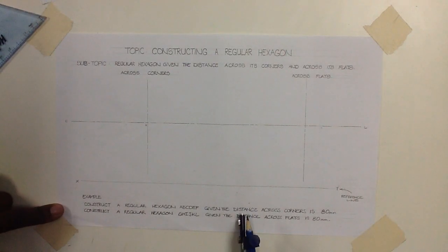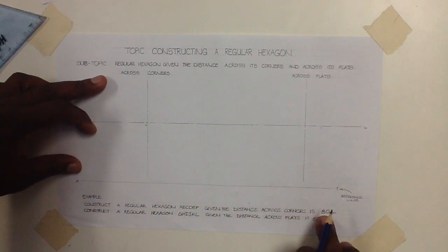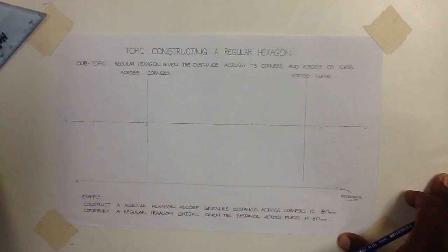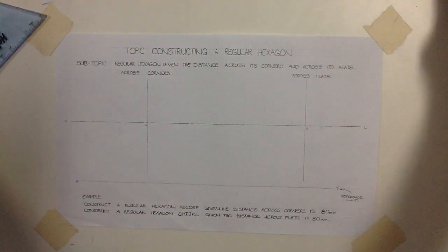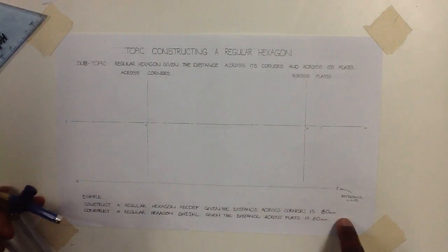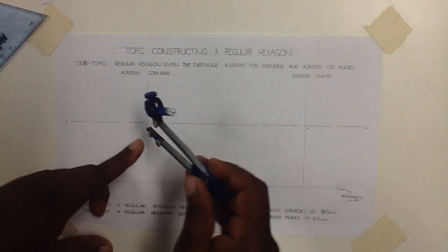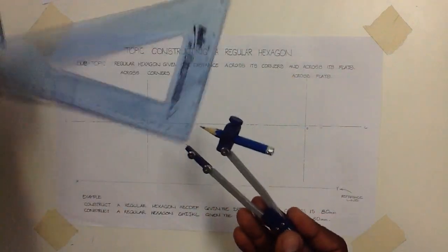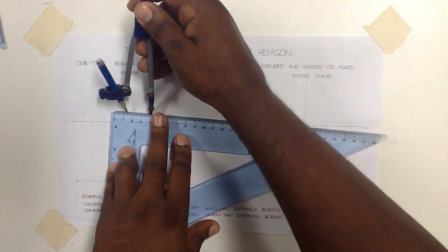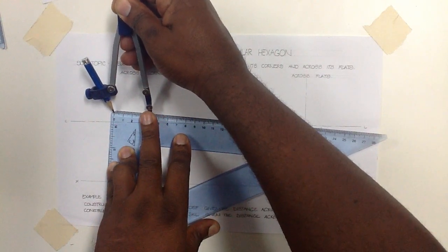The information given to us tells us that the across-corner method requires a distance of 80 millimeters, and the distance across flats is 80 millimeters, both being the same and a circle required. We are going to let the radius of our circle be equal to 40 millimeters. Why 40 millimeters? 80 millimeters, being the distance across, is also used as the diameter of the required circle. Half of the diameter is 40 millimeters. 40 millimeters is equivalent to 4 centimeters, and as you can see, it is not, so we're going to open up our compass until we achieve that measurement or distance required.